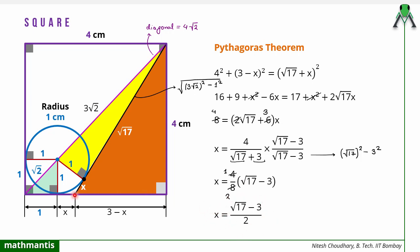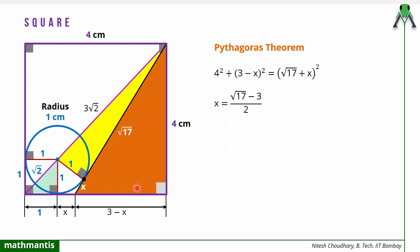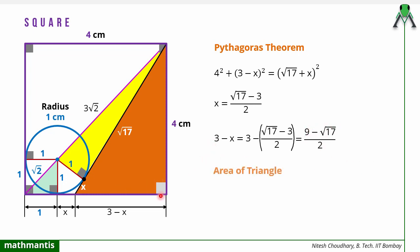Now knowing x, we know the base: 3 − x = 3 − (√17 − 3)/2. Taking LCM: (6 − (√17 − 3))/2 = (6 − √17 + 3)/2 = (9 − √17)/2. Remember the negative sign multiplies the −3 to give +3. The height is 4. So the area of the triangle is ½ × base × height = ½ × (9 − √17)/2 × 4. The 2 and 4 cancel to give the area equal to 9 − √17. That is the area of this particular triangle.